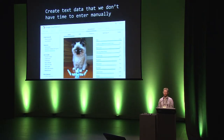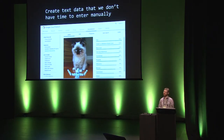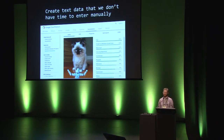You might also use these tools to create text that you haven't had time to enter manually — so subject keywords, captions. In this example I've just used the free single image uploader that Google Cloud provides, and we can see that it's even managed to detect the breed of cat correctly.